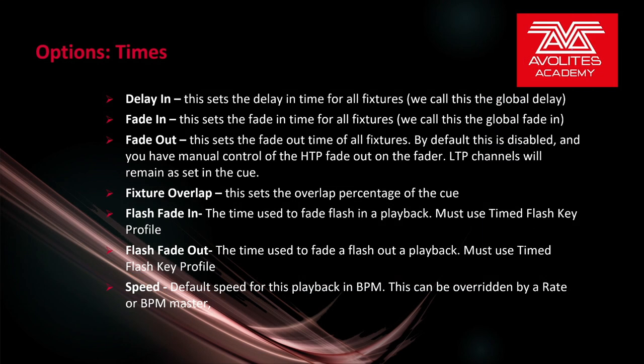Under the Times tab, Delay In sets the delay in time for all fixtures - we call this the global delay. Fade In sets the fade in time for all fixtures - the global fade in. Fade Out sets the fade out time of all fixtures. By default this is disabled and you have manual control of the HTP fade out on the fader; LTP channels will remain as set in the cue. Fixture Overlap sets the overlap percentage of the cue. Flash Fade In and Flash Fade Out can be used to have different flash in and flash out fade times when using the timed flash key profile. Speed is the default speed for this playback in BPM and can be overwritten by Rate or BPM Master. This is where you would set the BPM for an effect in the playback.